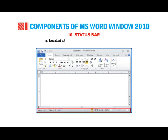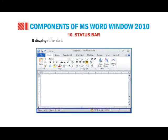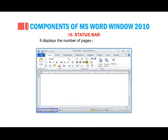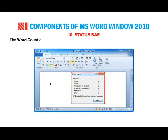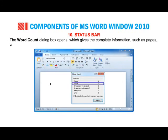Status Bar: it is located at the bottom of the document window and displays the status of the document you are working on. It displays the number of pages and number of words. If you need more information, double click on the words option on the status bar. The word count dialog box opens, giving complete information such as pages, words, characters, paragraphs and lines.